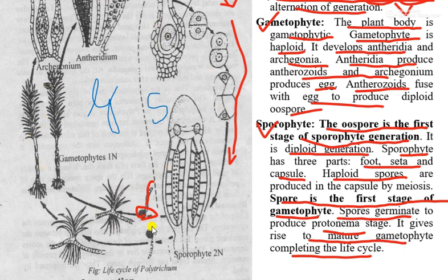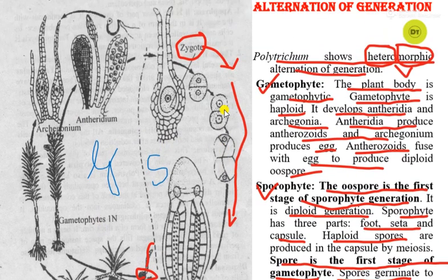The spore is the beginning of gametophytic generation and the zygote is the beginning of the sporophytic generation. Since there are two morphological forms — one gametophytic and the other sporophytic — and these two forms alternate among themselves to complete the life cycle, Polytrichum is known to have a heteromorphic alternation of generation.